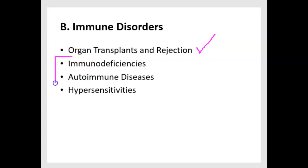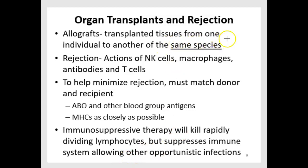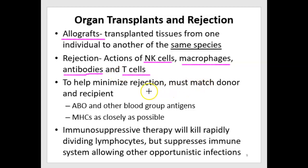I'll also talk about immunodeficiencies versus autoimmune diseases, and then hypersensitivities. Starting with organ transplants: transplanted tissues from one individual to another of the same species is called an allograft — 'allo' means same. Rejection can occur even though it's from the same species, due to a person's natural killer cells, macrophages, antibodies, and T cells. To minimize rejection, it's important to match the donor and recipient as closely as possible in terms of the major histocompatibility complexes — MHC I and II.